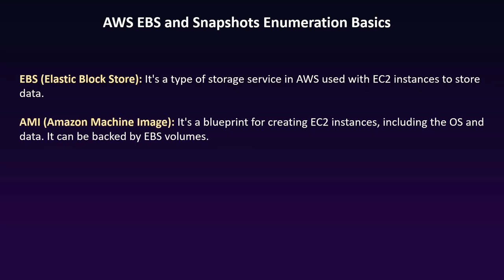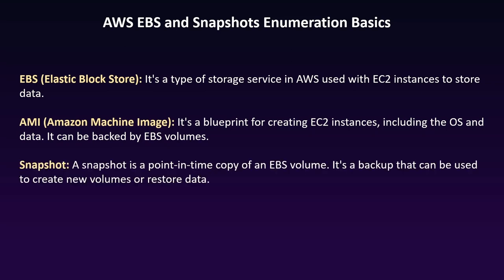An AMI is a pre-configured image used to create EC2 instances — it includes the operating system, application software, and associated data; essentially a blueprint of your EC2 instance. An EBS snapshot is a backup of an EBS volume at a specific point in time. Snapshots are incremental, meaning they only store changes since the last snapshot, making them efficient. If you want to learn more, check the AWS official documentation.